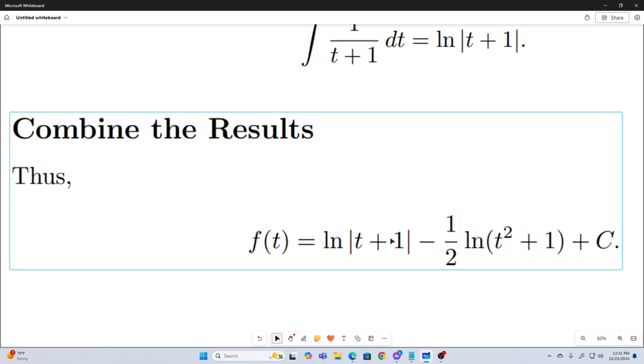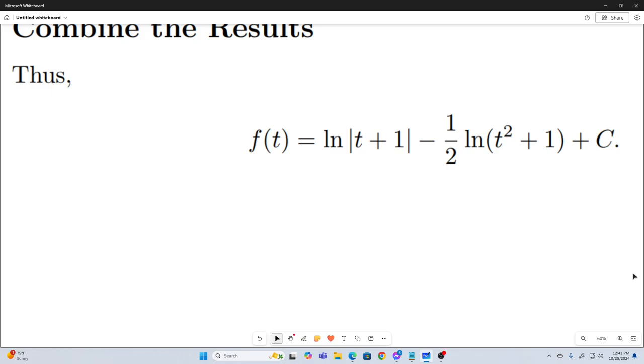Again, we don't need the absolute values because we are not evaluating our function of t at any point that would cause this term inside the natural log to be negative. All right. So now we have our f of t plus that constant of integration that we need to solve for.